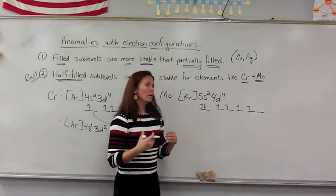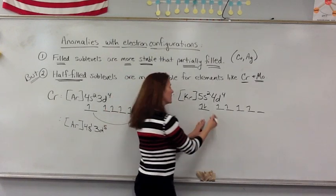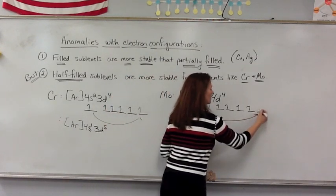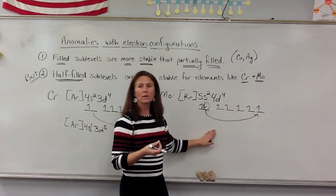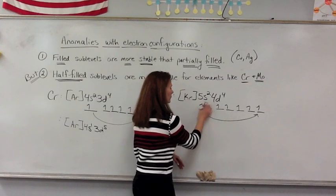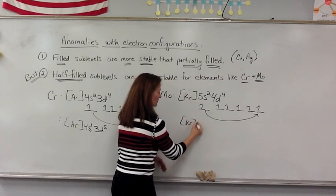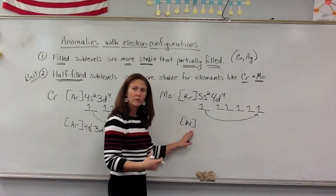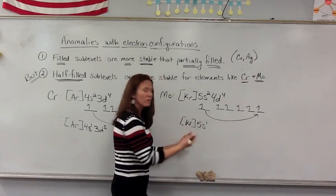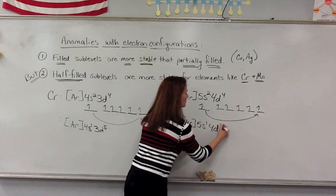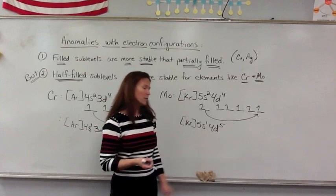So, in order to be a little bit more stable, molybdenum actually takes one out of the 5s, shifts it over to fill, or half fill, excuse me, that 4d sublevel. And then, ends up having a configuration of krypton, with just one electron in the 5s, and then, the 4d with a half-filled sublevel, 4d5.